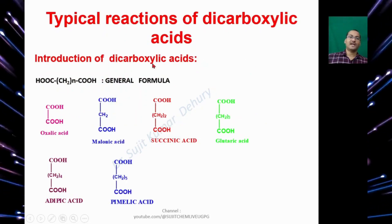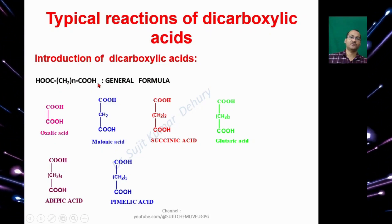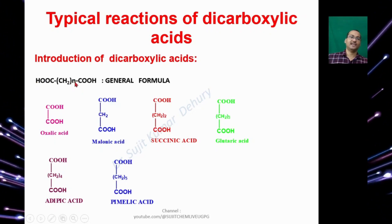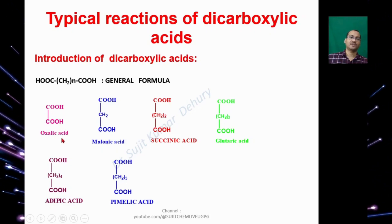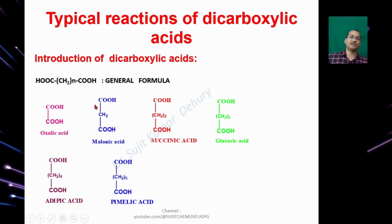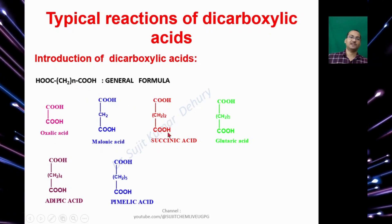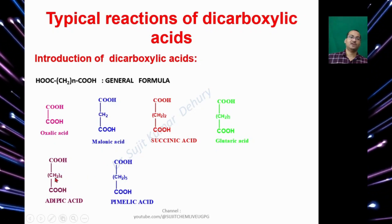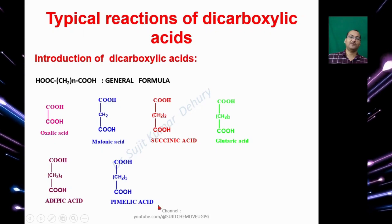So introduction to Dicarboxylic Acids. The general formula is (CH₂)n(COOH)₂. When n=0, this becomes Oxalic Acid (COOH·COOH). When n=1, this becomes Malonic Acid (CH₂(COOH)₂). When n=2, this becomes Succinic Acid. When n=3, that becomes Glutaric Acid. When n=4, that is Adipic Acid. When n=5, this is called Pimaric Acid.